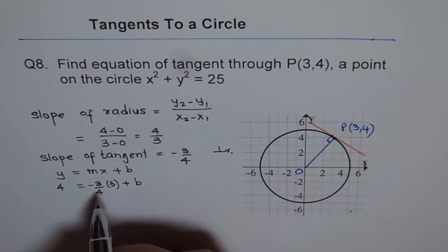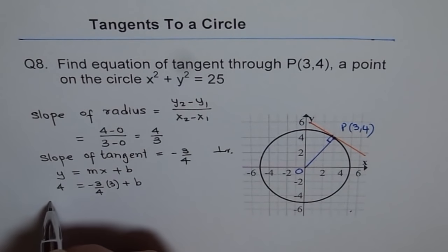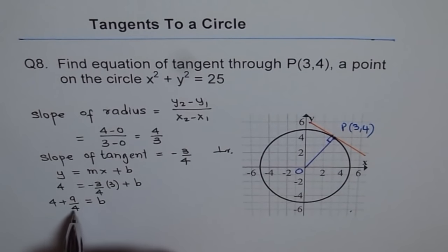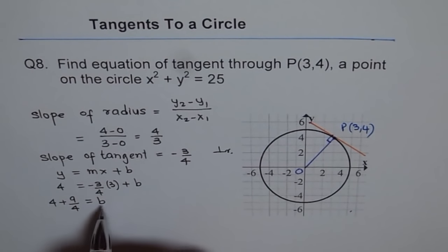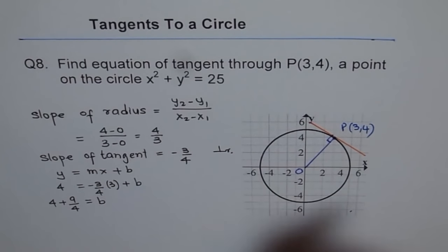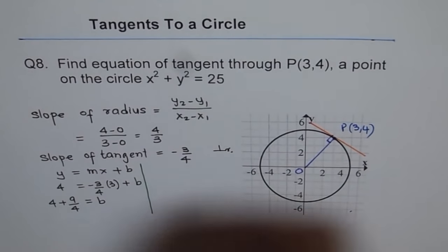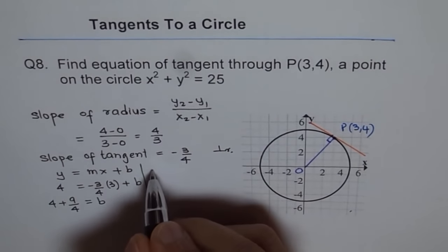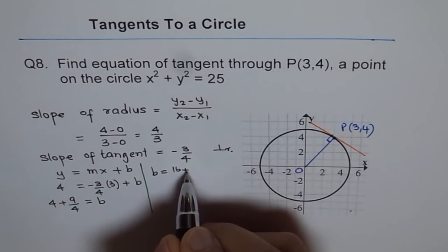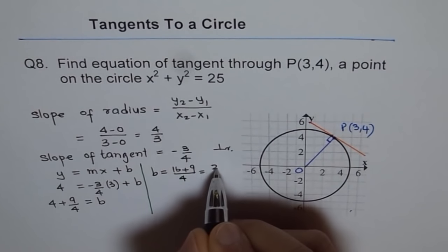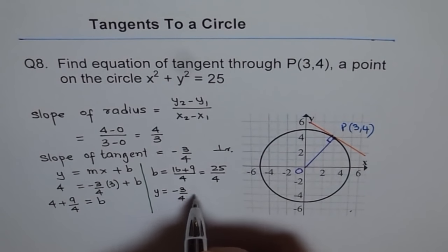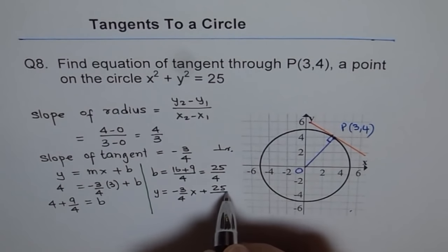That gives us -9/4 on the right side. Bringing it to the left side: b = 4 + 9/4. Solving this: 4 × 4 = 16, and 16 + 9 = 25, so b = 25/4. Therefore, the equation of the tangent line is y = -3/4 x + 25/4.